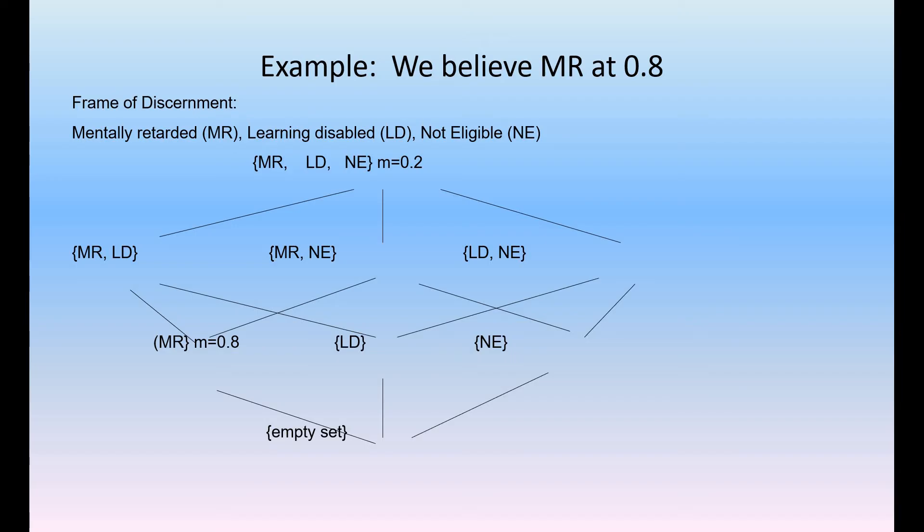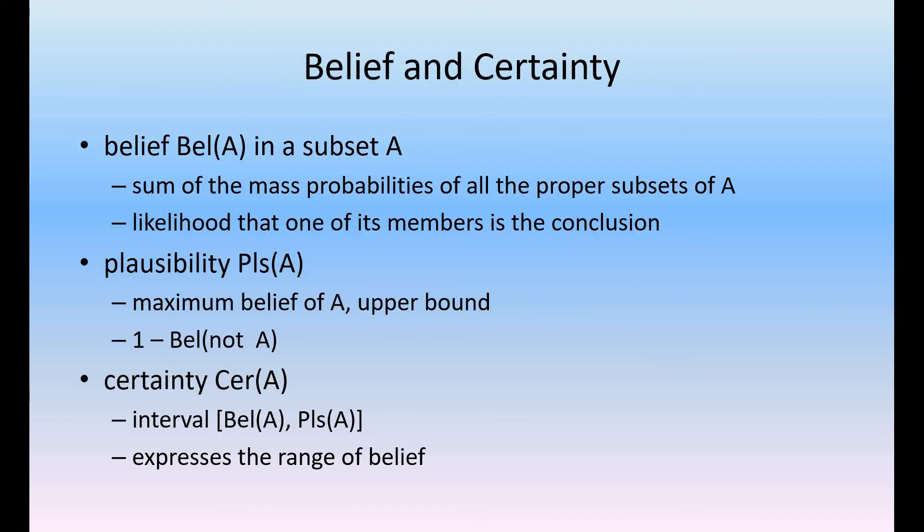Here also, the frame of discernment we don't know anything. So we believe not MR at 0.7, so we believe not M is equal to 0.7. For that we need some kind of measurements, those are belief, plausibility, and certainty.